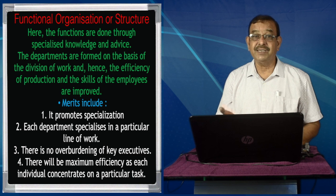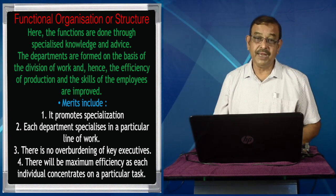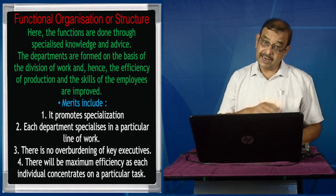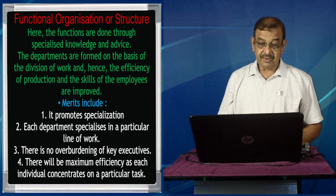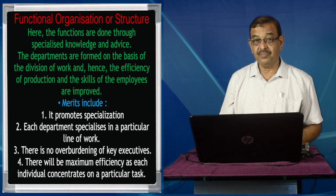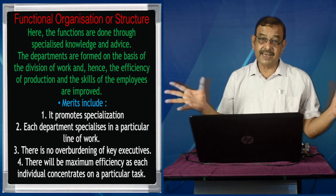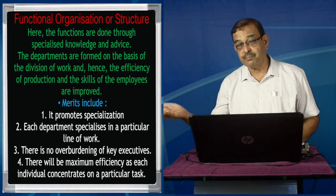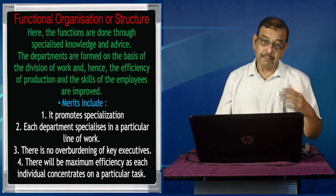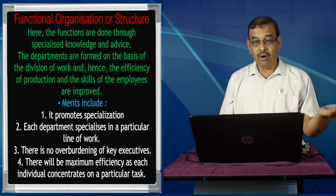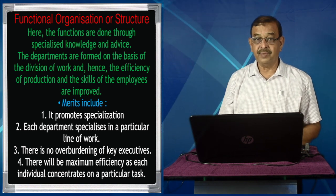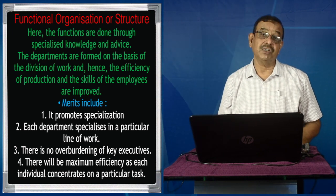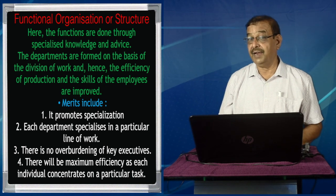What are the merits? It promotes specialization — one can stick to their own areas of specialization, and each department specializes in a particular line of work. There is no overburdening of key executives because the flow of authority is clear. The general manager of marketing will assign advertising to the advertising manager, marketing research to the marketing research manager, and sales activities to the sales manager. Things are streamlined, and there will be maximum efficiency as each individual concentrates on a particular task with defined areas of operation.